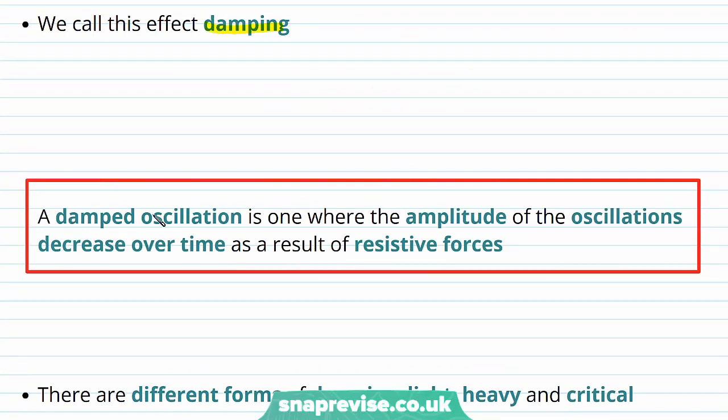We call this effect damping. We define a damped oscillation as one where the amplitude of the oscillations decreases over time as a result of resistive forces.